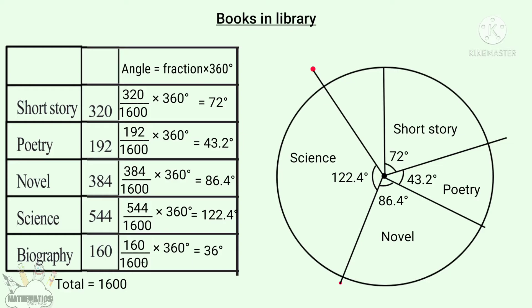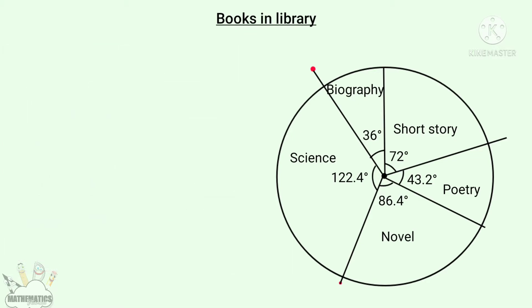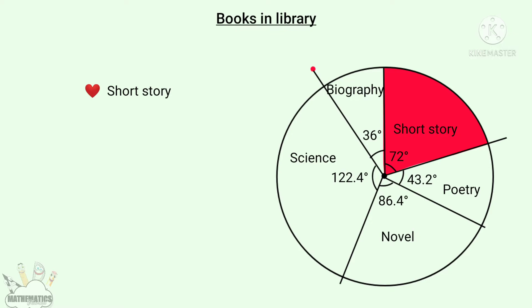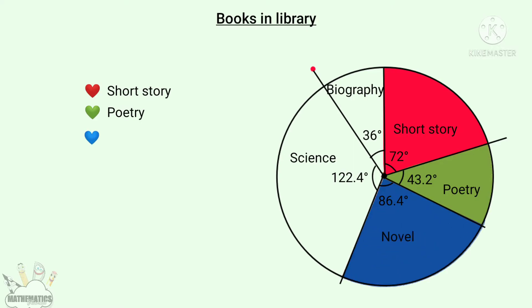The other segment here is the Biography segment. The other portion is the Biography portion. This angle is 36 degrees. Now we set colors in the circle: red represents Short Story, green represents Poetry, blue represents Novel, yellow represents Science, orange represents Biography.